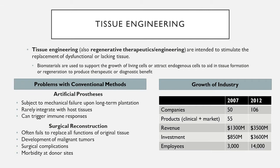For our purposes, biomaterials are used as a construct or matrix to support the formation and growth of living cells and attract endogenous ones that aid in tissue formation and regeneration of the host tissue for some kind of benefit. Tissue engineering really came about in the early 1990s as a solution to conventional problems with two separate approaches. One of those is the use of artificial prostheses, which we've been learning about all semester.